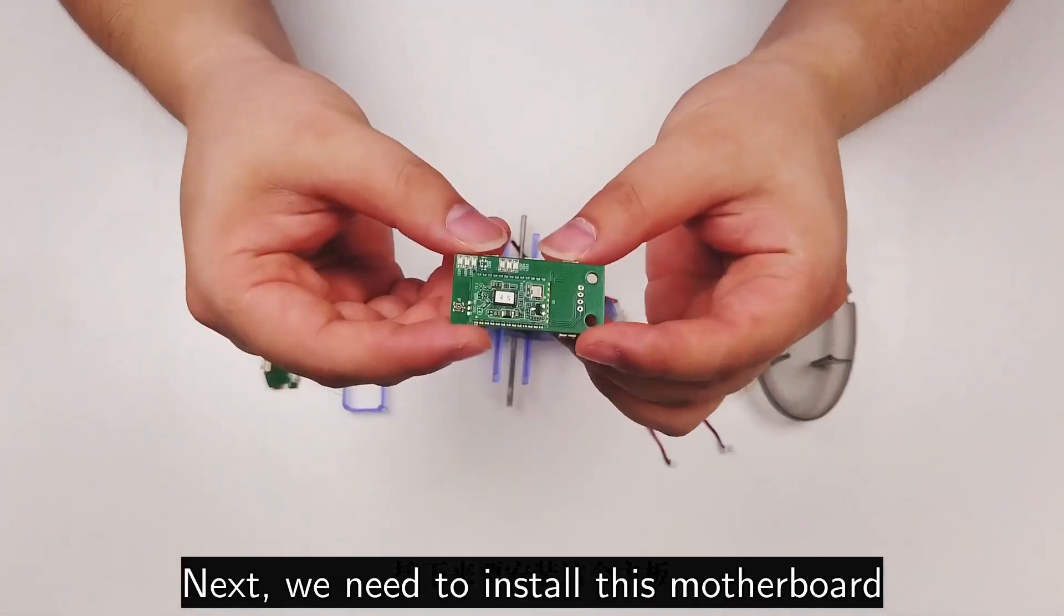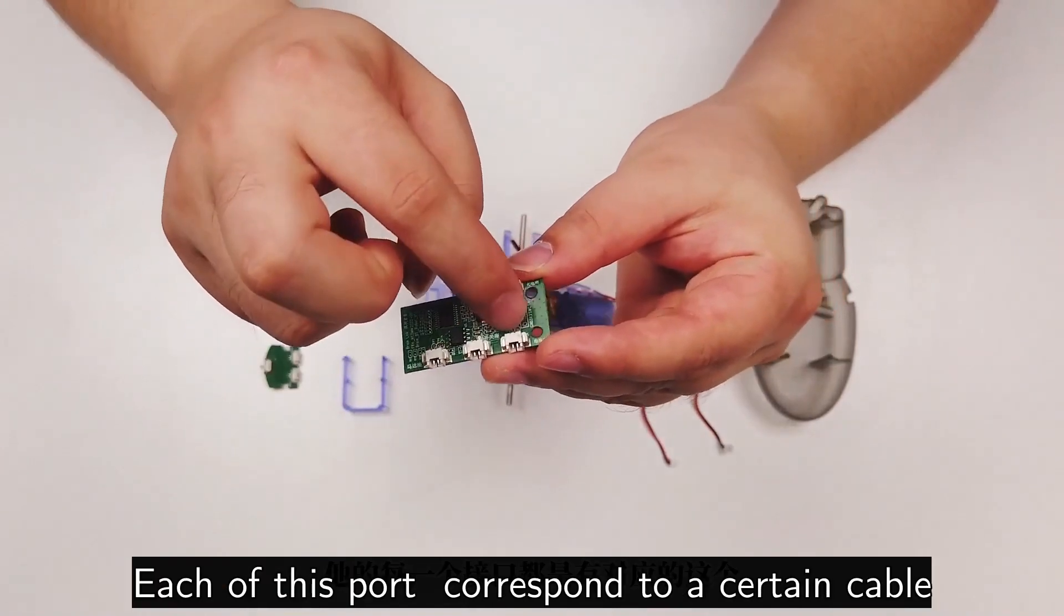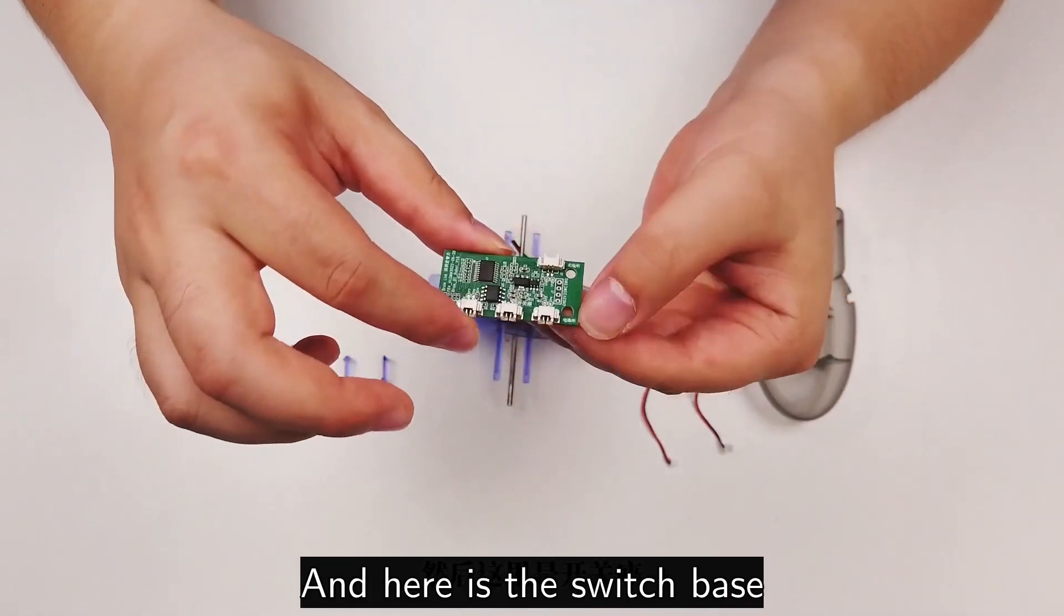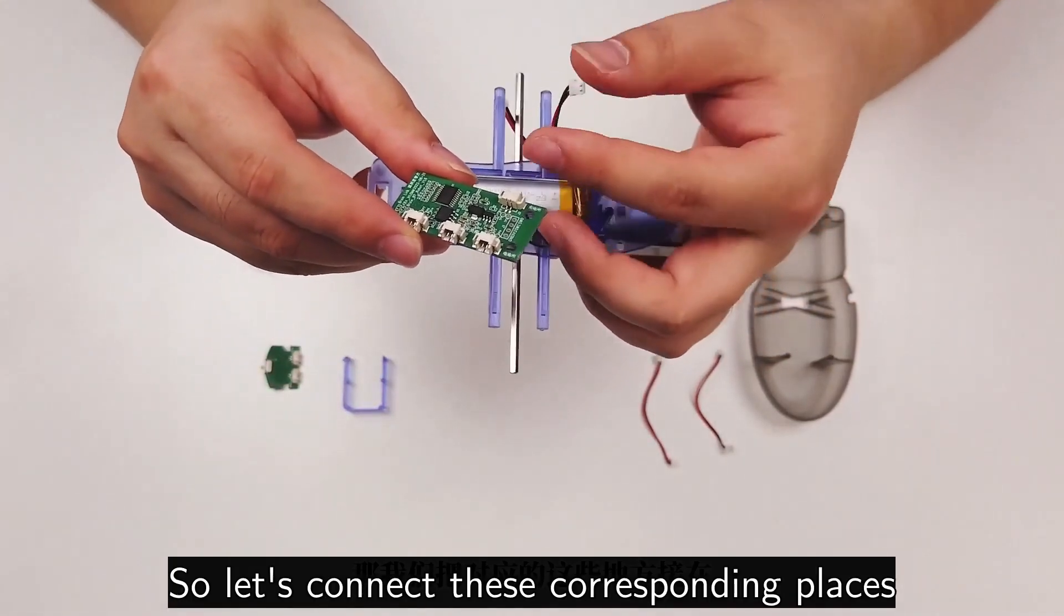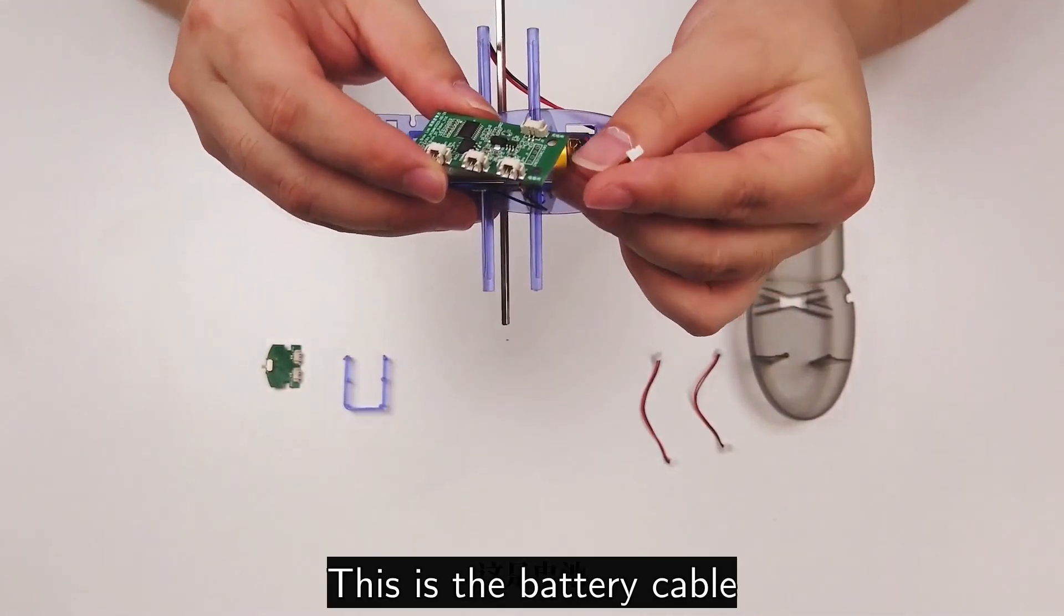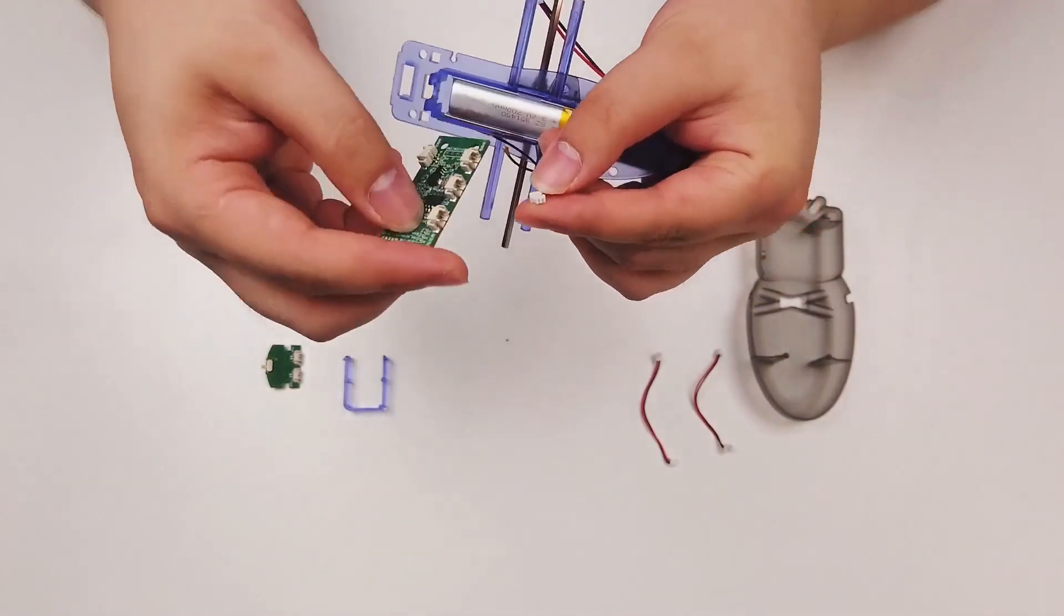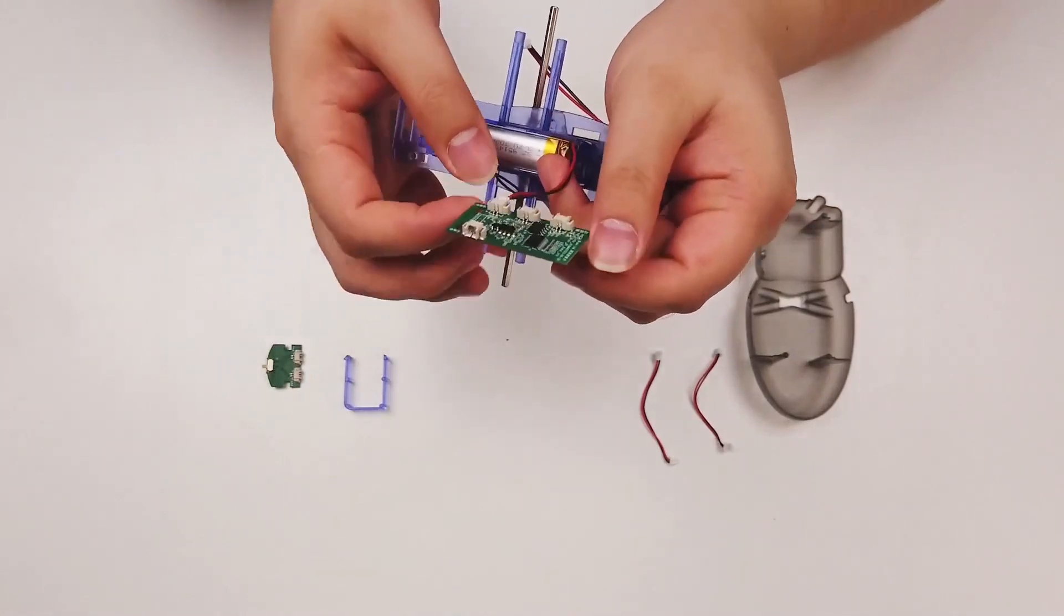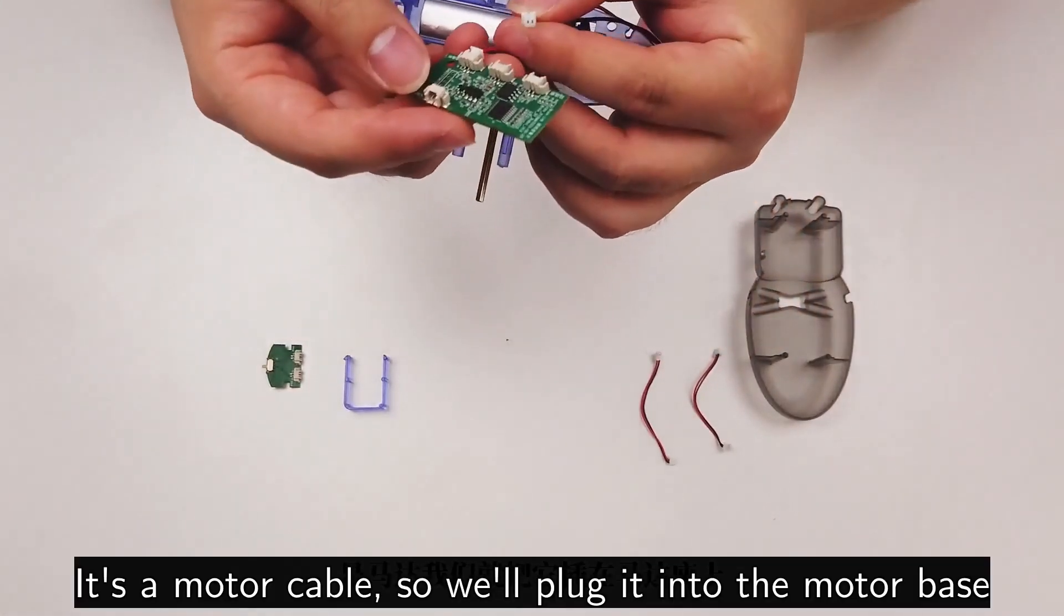Next we need to install this motherboard. We can see on this motherboard each port corresponds to a certain cable. This is the motor seat, here is the switch base, battery port. Let's connect these corresponding places. This is the battery cable. We will insert the battery cable into the battery port, and then next it's the motor cable, so we'll plug it into the motor base.